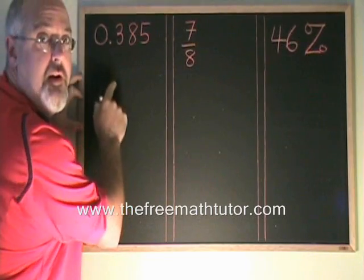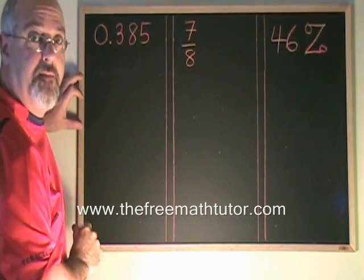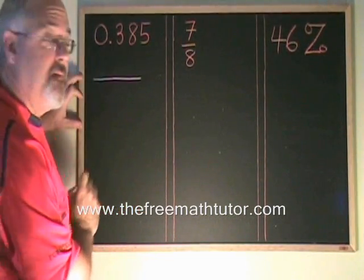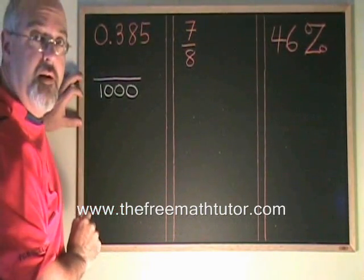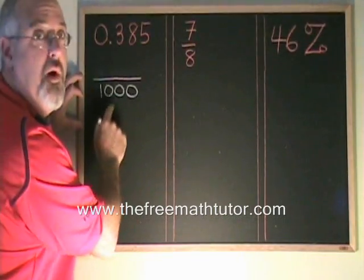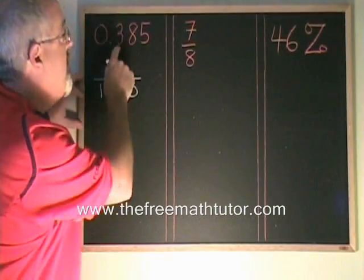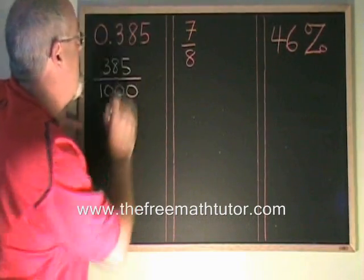We count how many numbers we have after the decimal point, and we have three. So what we do is we make a big fraction line. We put a thousand on the bottom, a one with three zeros, one for each of these numbers, and then we put the number 385 on the top with no decimal.